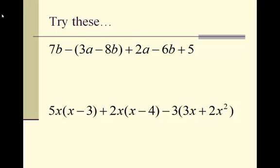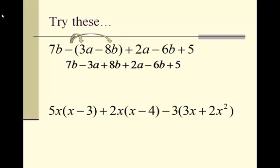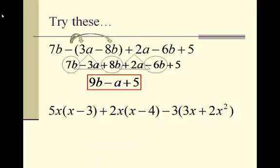Try these next two problems and then pause the video until you are ready to go over them. Looking at the first problem, we begin by distributing the negative sign through the first set of parentheses. The 7b stays at the beginning; we have minus 3a plus 8b, and then plus 2a minus 6b and plus 5. Now we look for like terms: 7b, 8b, and negative 6b are all like terms — they combine together. Negative 3a and plus 2a are like terms — they combine together. 7b plus 8b is 15b, minus 6b is 9b. Negative 3a plus 2a is negative a. Final answer is 9b minus a plus 5.